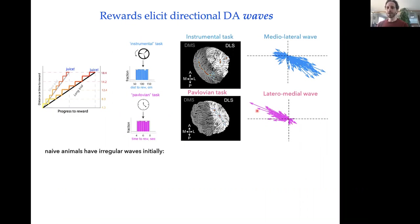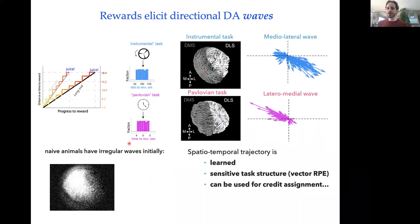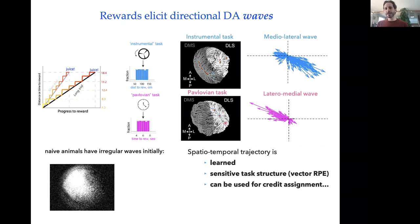This is a novel observation that there are waves in the dopamine system subcortically, and they differ depending on task demands. In naive animals who get unexpected rewards before learning either task, you still see interesting spatial-temporal dynamics — but they're irregular, not going consistently in one direction or the other. The summary is that this spatial-temporal trajectory of dopamine signals is learned and sensitive to task structure, which you can think of as a vectorized version of a reward prediction error — not just that dopamine goes up or down, but with a direction reflecting underlying task structure.